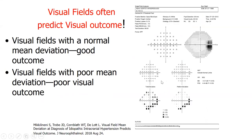Visual fields predict visual outcome. If the visual field is abnormal, the visual outcome could be poor, and we don't want anyone to lose vision from this disorder. That's why we must follow visual fields carefully.